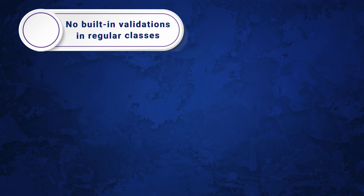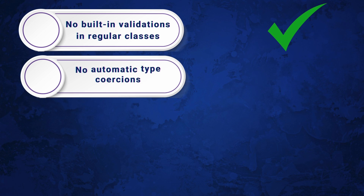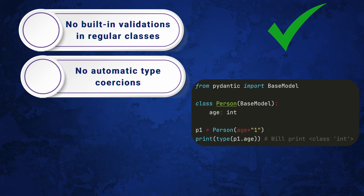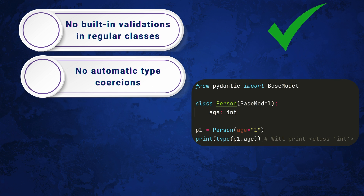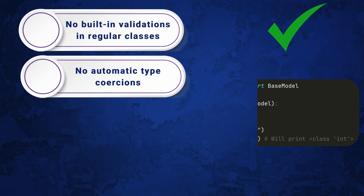There is no built-in validation for received values in regular classes, and Pydantic has a lot of ways of doing it — we will see some examples in this video. Also, there is no automatic type coercion. The best example is when a received value has been delivered as a string with double quotes instead of just the integer one, and Pydantic identifies that it should be coerced into an integer. In regular classes, it will remain a string, which is problematic.